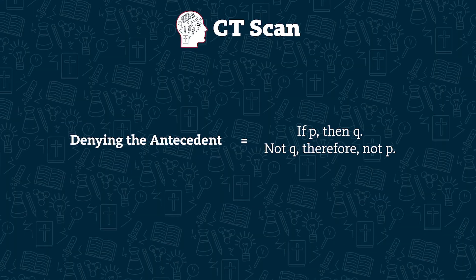In this case, P is the statement 'you have a dog,' and Q is the statement 'you are a pet owner.' Denying the antecedent means showing the if statement, P, is false, in order to argue that the then statement, Q, is also false, using the structure: if P, then Q. Not-P, therefore not-Q.